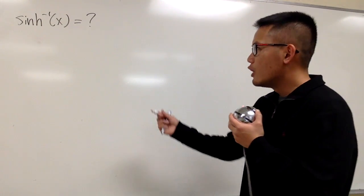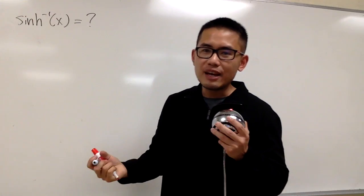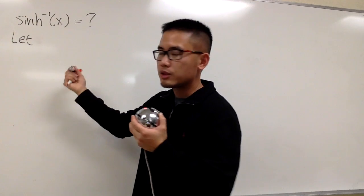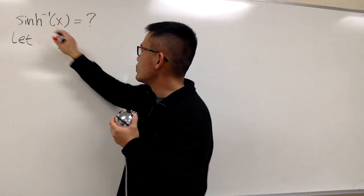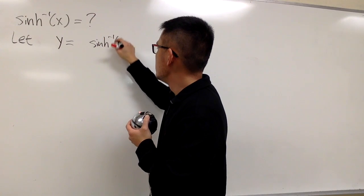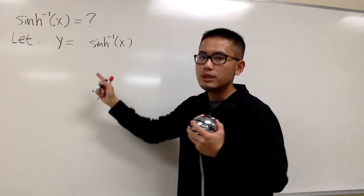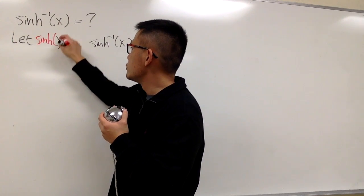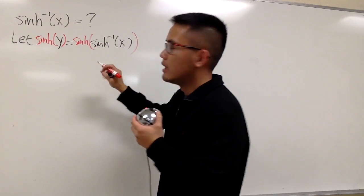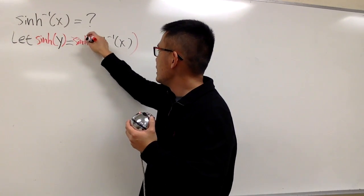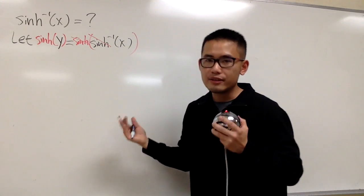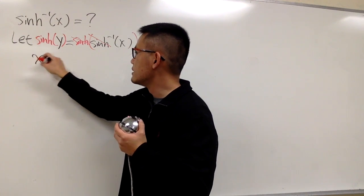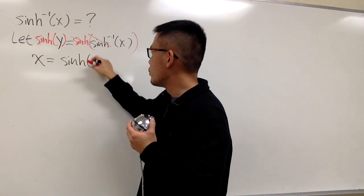Let's take a look. Here we only have the inverse, and this is the style of doing these kinds of things. Let me begin by setting another variable — I'll call this y, so that y equals the inverse sinh x. The reason for doing this is so that I can now take the original sinh on both sides, and the original and the inverse cancel each other out. So I get x equals sinh y.